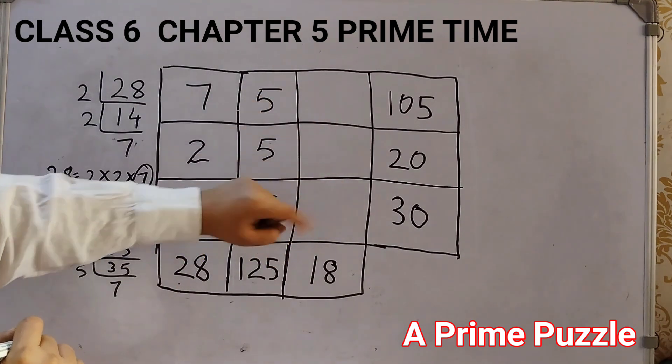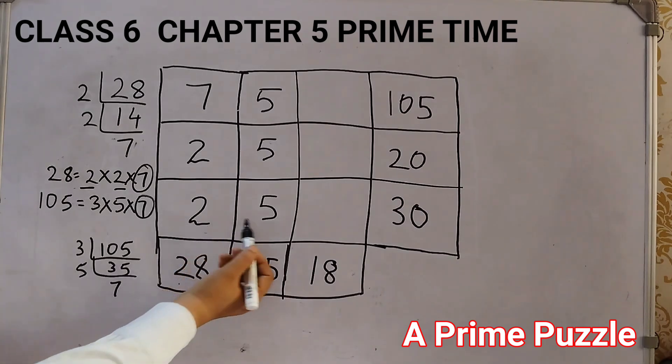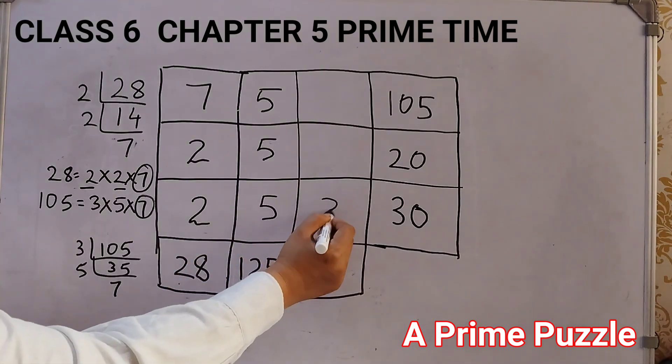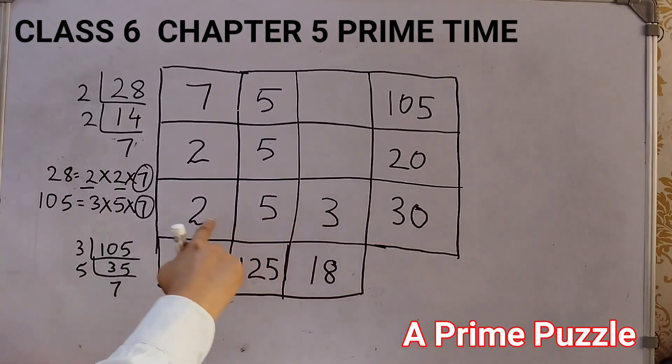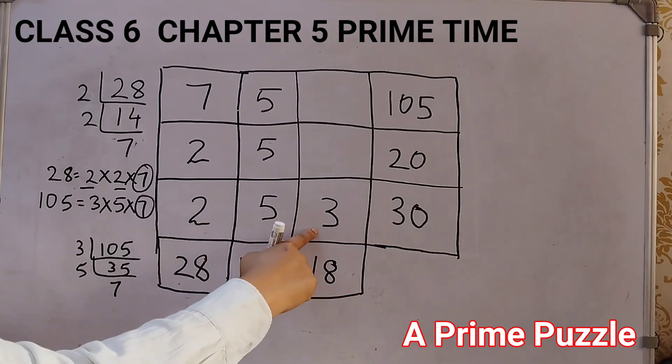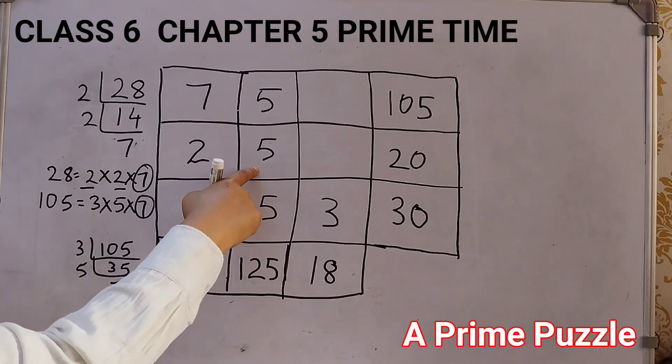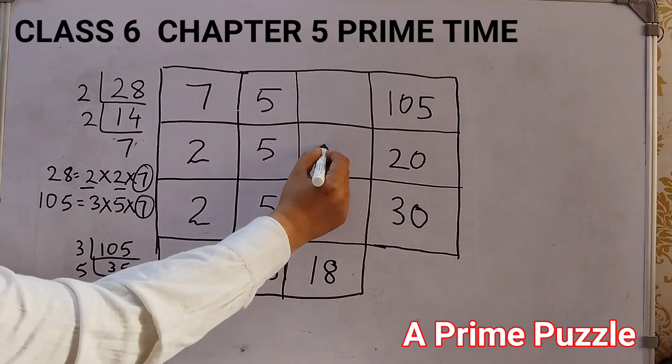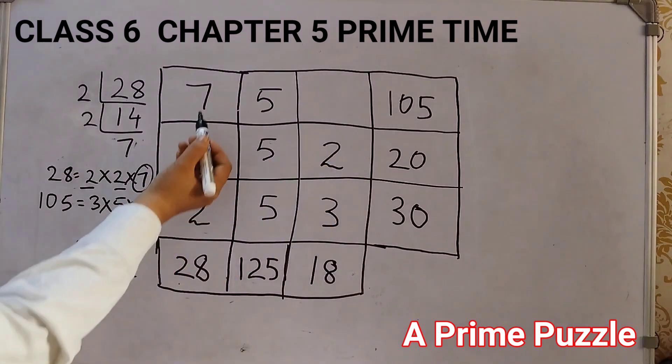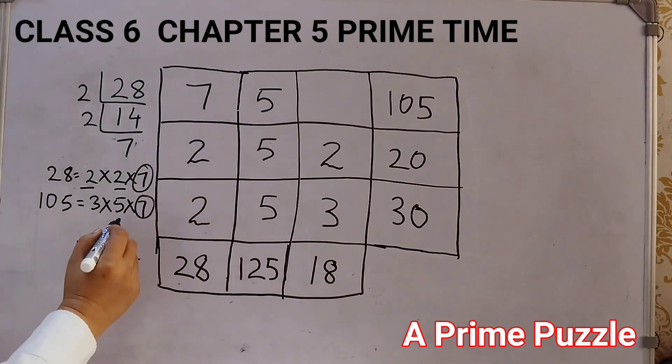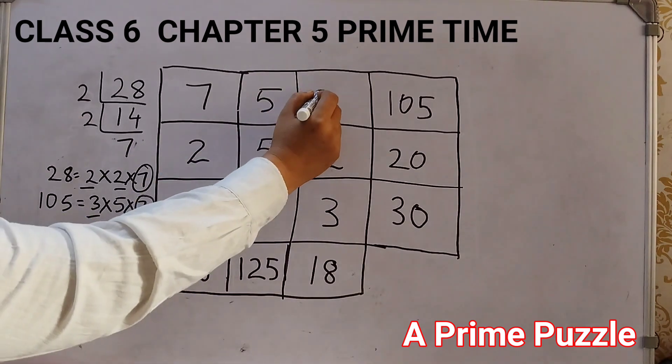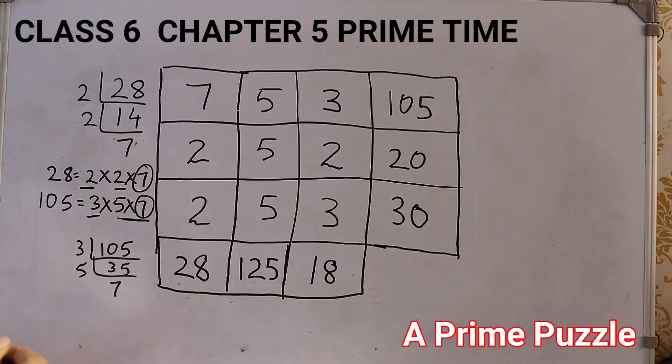Now, just this column is left. And it is very easy. Because, 2 into 5 is 10, 10 multiplied by 3 gives 30. Right? 2 5s are 10, 10 3s are 30. Similarly, 2 into 5 is 10, 10 into 2 is 20. So, this will be 2. 7 5s are 35. So, what is remaining? 3. So, we are done.